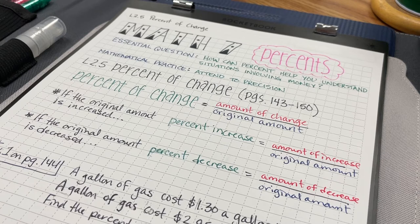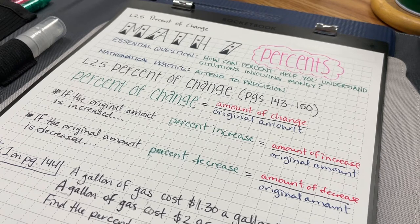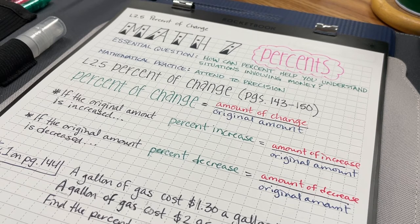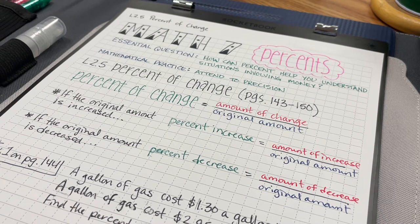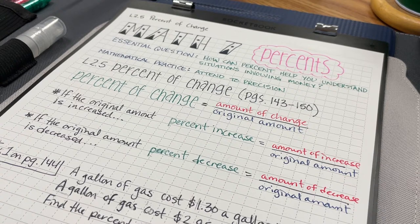In Lesson 2.5 Percent of Change, we're going to look at how costs of certain items have changed over time and what percent it has changed by.